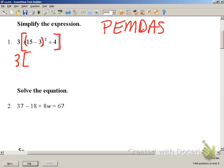We are going to have 3 times, 15 minus 3 is 12. We are going to keep that inside the parentheses for that exponent's sake, divided by 4.